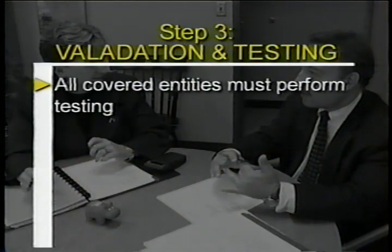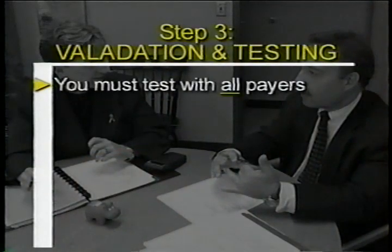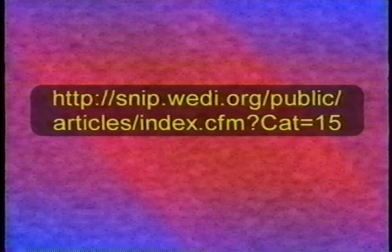The next step is validation and testing. All covered entities must perform testing. For providers, focus on key transactions such as the claim, remittance advice, and eligibility transactions. Test with all of your payers, not just one. The Work Group on Electronic Data Interchange and the Strategic National Implementation Process (WEDI SNIP) has a suggested seven-step testing process you can follow, available at WEDI's website. Testing must begin no later than April 16, 2003. Try to test early and often, as testing may take many months.